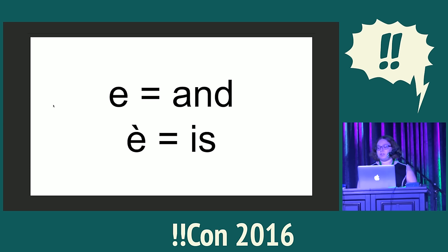ASCII was the first standard for storing character information on a computer. It was an early standard — it didn't have a zero-width joiner either. It had English characters. So people would work around this in other languages by writing letters without putting accents on them, kind of hoping for the best. If there's one or two of these, it's pretty understandable. This example is in Italian, and you can kind of muddle your way through it. It's frustrating.